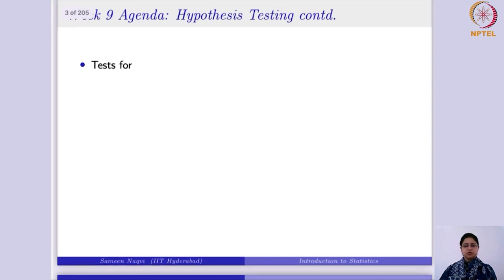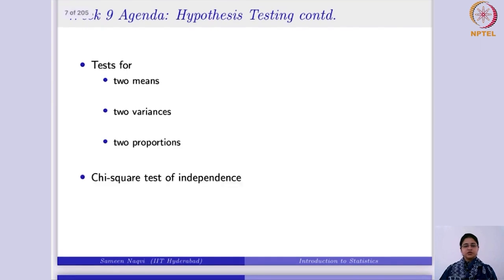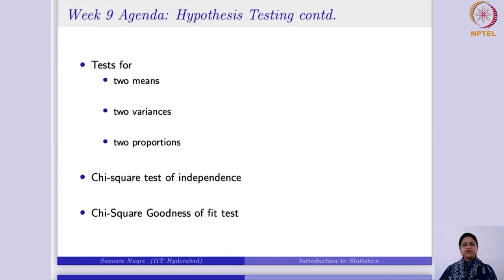In this week, we are first going to learn about the test for two means, then we will learn about two variances, two proportions. In addition to this, we are going to learn about chi-square test of independence and chi-square goodness of fit test. Chi-square distribution is very important whenever we are dealing with the sample variance, or whenever you are interested in the population variance and want to estimate it.